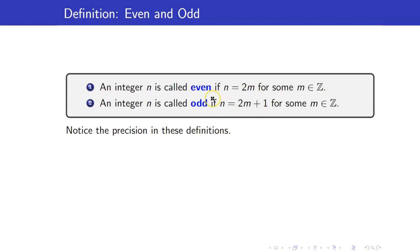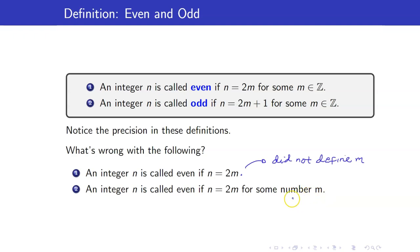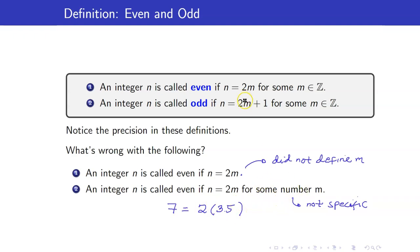Notice the precision in these definitions. If we had written 'n equals 2m' without defining what m is, that would be ambiguous. Or if we said 'n equals 2m for some number m,' we don't specify what kind of number m is. Using an imprecise definition, you could claim all integers are even — for instance, 7 equals 2 times 3.5 — but the definition requires m to be an integer.